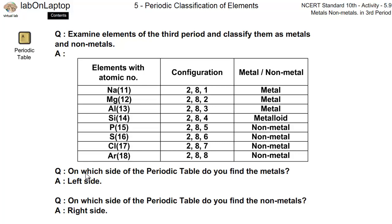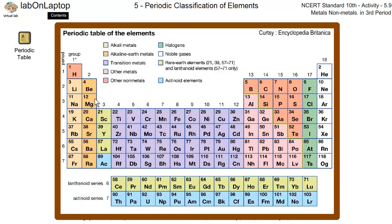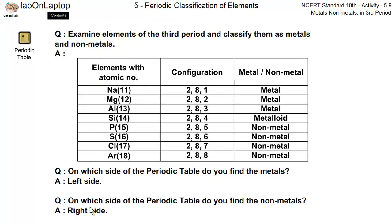So next question, on which side of the periodic table do you find the metals? So left side of the periodic table. On which side of the periodic table do you find the non-metals? So that is the right side.